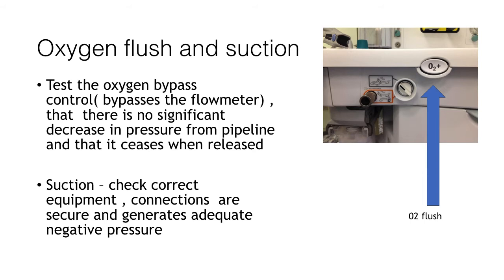Next we need to check the oxygen flush and also that the suction is working. The oxygen flush is essentially a bypass control so that it will deliver oxygen at the pipeline pressure — at 4 bar or 400 kilopascals. You should test the oxygen bypass control and there shouldn't be a significant decrease in pressure, and when you stop pushing the oxygen flush the gas flow should cease. Secondly, you need to check the suction — you should check that you have the correct suction equipment, whether that be a Yankauer sucker or a suction catheter, ensure all connections are secure, and that when the suction is turned on it is able to generate adequate negative pressure to function correctly.